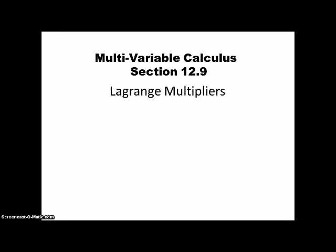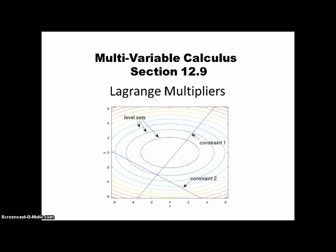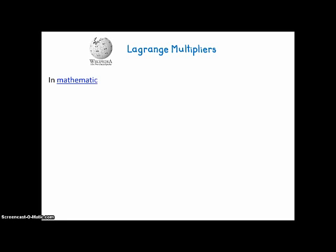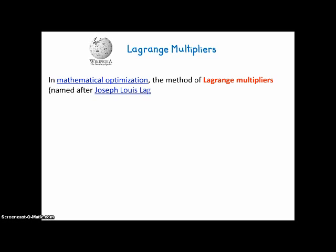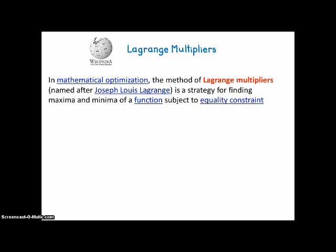Multivariable Calculus, Section 12.9: Lagrange Multipliers. According to Wikipedia, in mathematical optimization, the method of Lagrange Multipliers, named after Joseph Louis Lagrange, is a strategy for finding maxima and minima of a function subject to equality constraints.